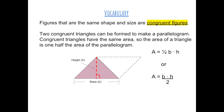Figures that are the same shape and size are congruent figures. Two congruent triangles can be formed to make a parallelogram. Congruent triangles have the same area, so the area of a triangle is one-half the area of a parallelogram.